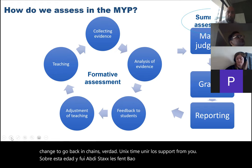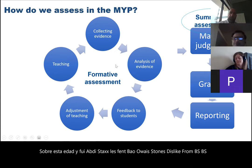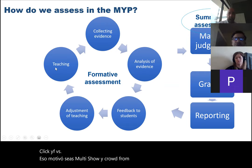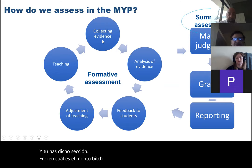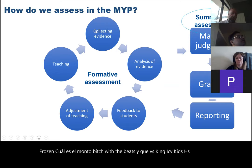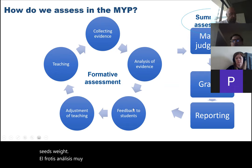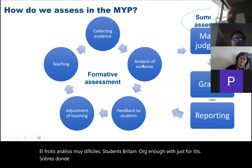Let's think about how you assess. This slide — which I borrowed from an IB workshop — shows the division between formative and summative assessment. Basically: we teach a section, lesson, or project; we collect evidence — by asking, by looking, by written or oral work; we analyze that evidence and give feedback to students; and then we adjust our teaching based on what we find. If things go wrong, we adapt. That's why we never teach the same unit the same way twice.